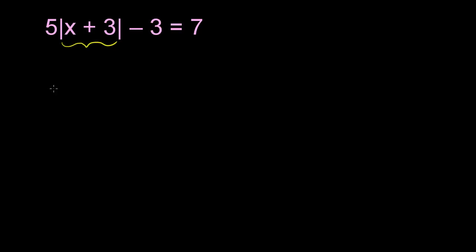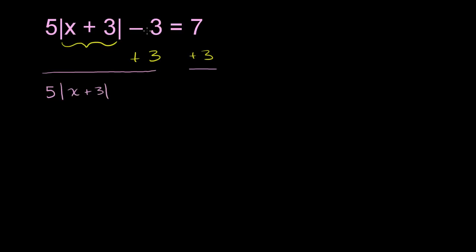The first thing we might want to do is add 3 to both sides of the equation. That'll get rid of this negative 3 on the left-hand side. So we add 3 to both sides. The left-hand side will still be 5 times the absolute value of x plus 3. The negative 3 plus 3 cancel out, and the right-hand side becomes 7 plus 3, which is 10.